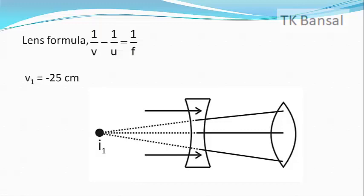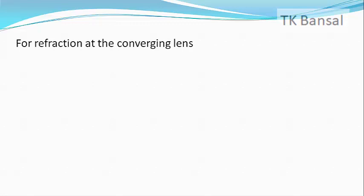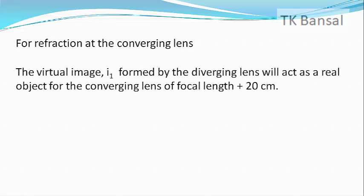Now let us consider the refraction from the converging lens of focal length F2 equals plus 20 cm. The virtual image found by the diverging lens will act as a real object for the converging lens.